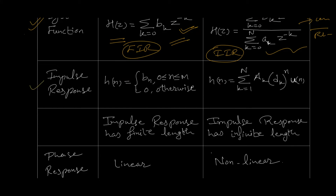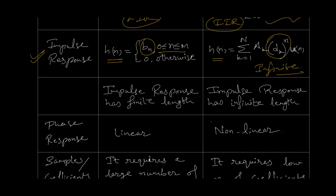Next we will compare the impulse response of the two filters. For FIR filters we have some constant value only, and that value is finite — it is between 0 to M. But for IIR filters, the value is in the form of a geometric sequence, and geometric sequences never decay to zero, so this results in the response being infinite in nature. We can conclude that since the impulse response of IIR is infinite, it is known as infinite impulse response filter, whereas the finite impulse response of the FIR filter is why it is called finite impulse response filter.